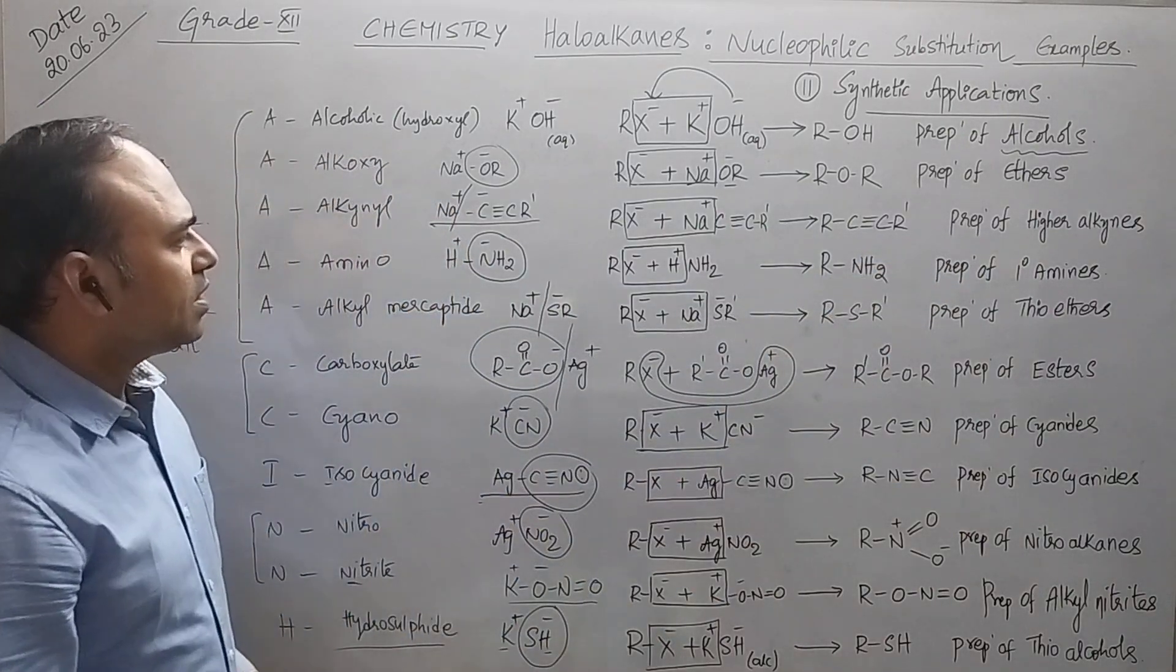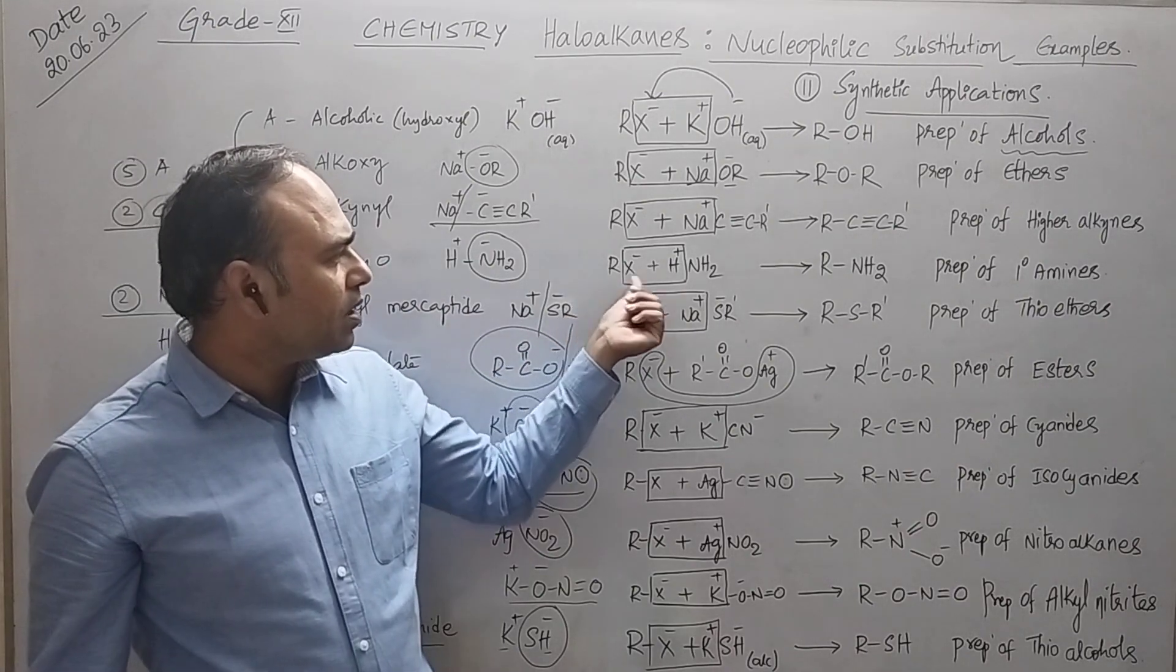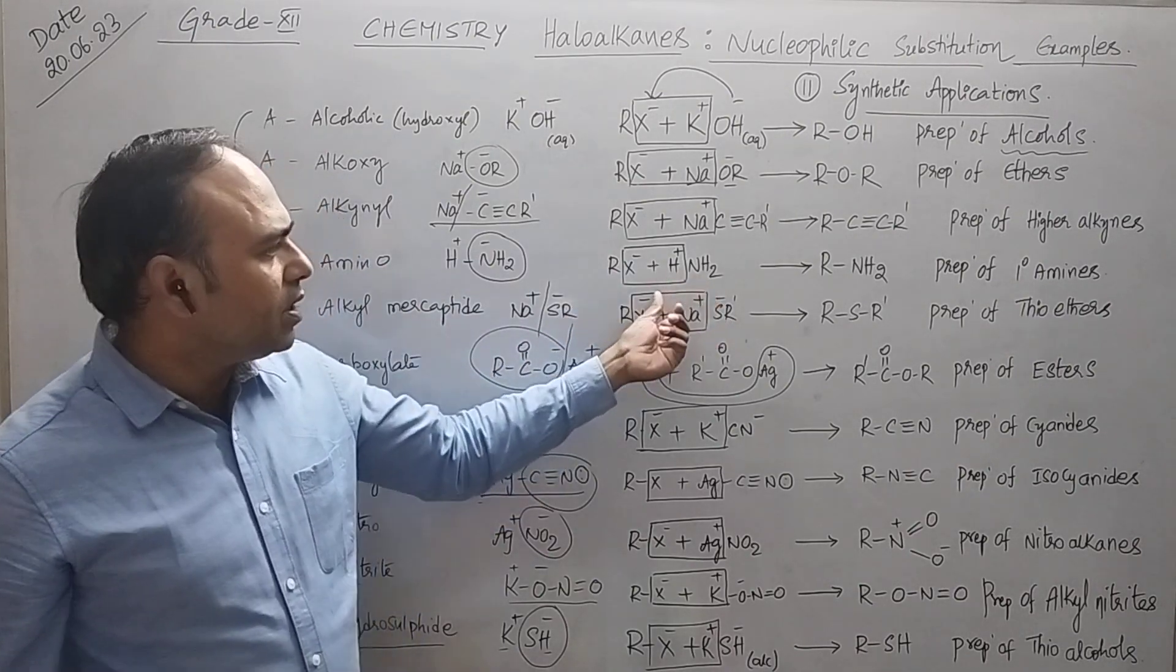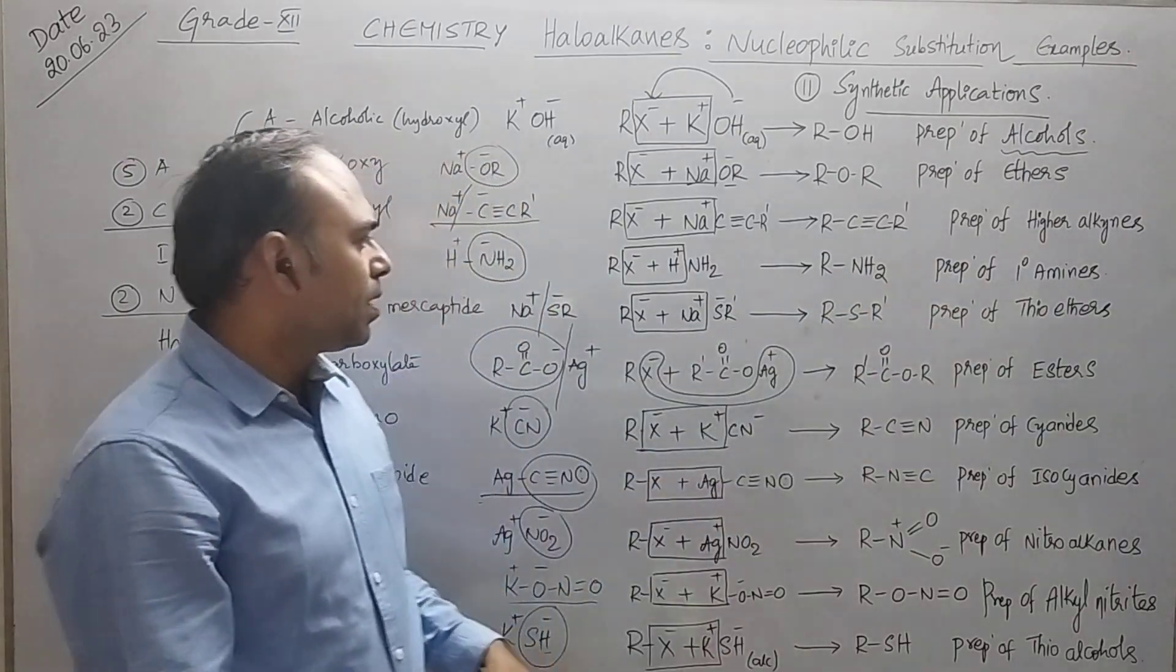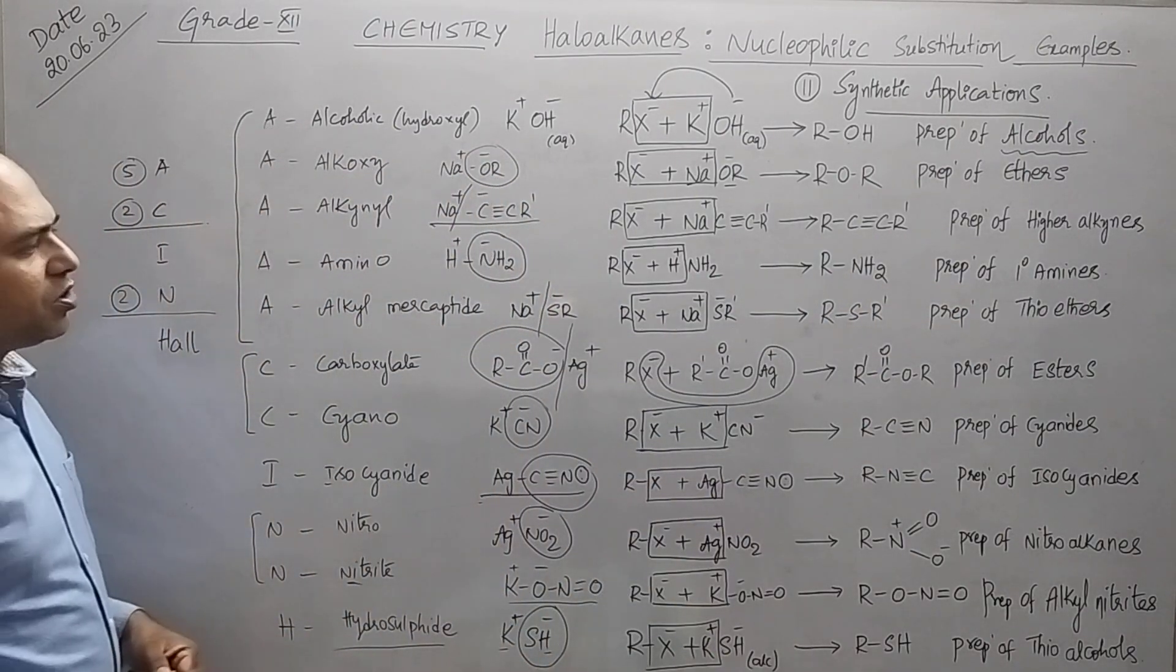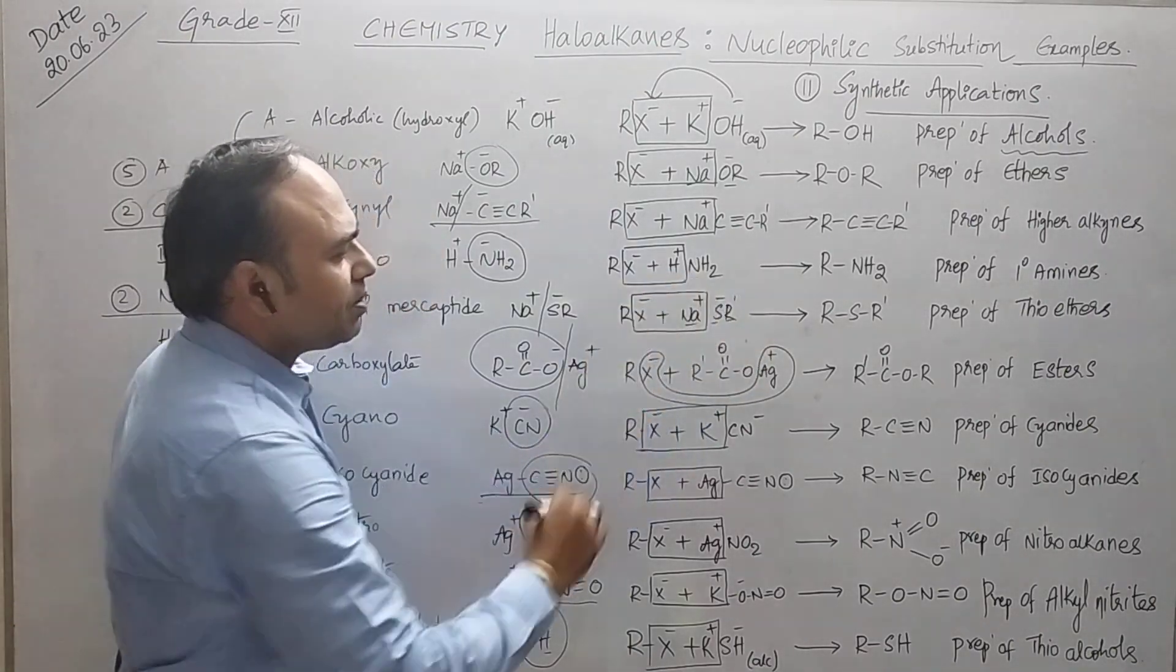Next, coming to the next one, that is amino group. Haloalkanes plus ammonia, you are going to get amines here, nothing but primary amines will be formed. Next, nucleophilic substitution by taking sodium alkyl mercaptide, we are going to get thioethers.